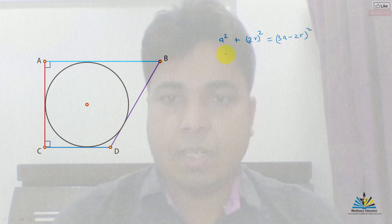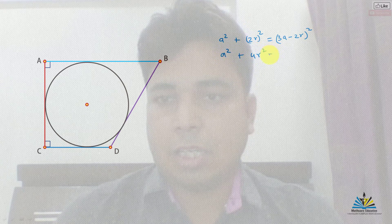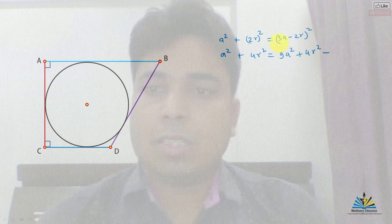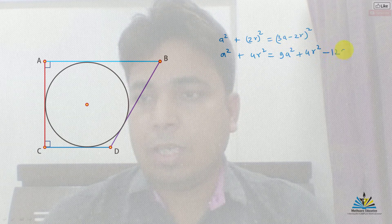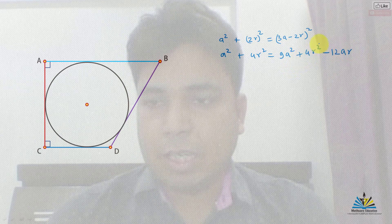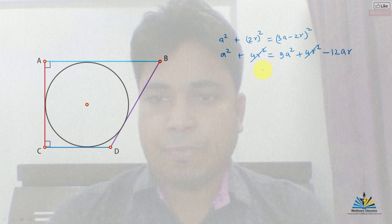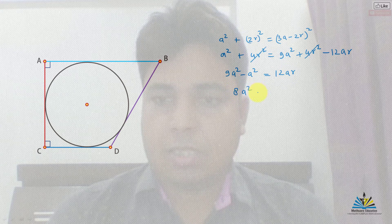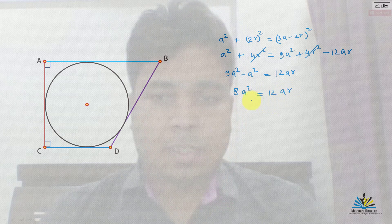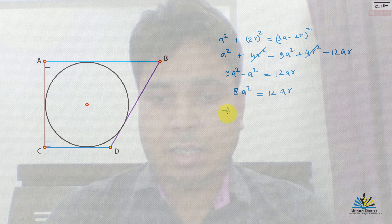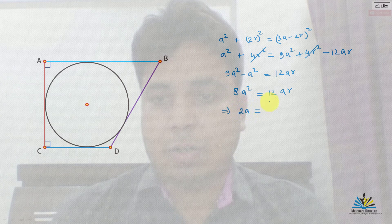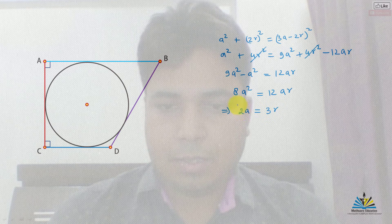If we simplify this, we get a squared plus 4R squared equals 9a squared plus 4R squared minus 12aR. We can cancel 4R squared from both sides. So 9a squared minus a squared equals 12aR, giving us 8a squared equals 12aR. Since a is not equal to 0, we can cancel a, and canceling 4 as well, this becomes 2a equals 3R. This is the first result.